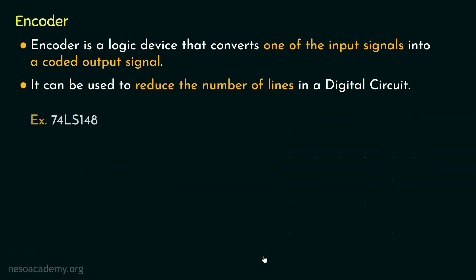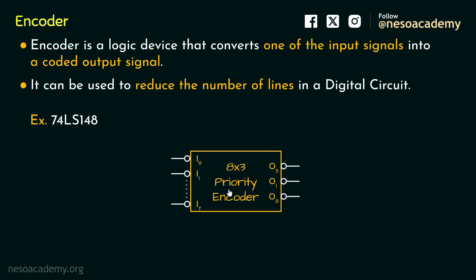Now specifically in case of 8085 microprocessor, the encoder 74LS148 is used. This is an 8 to 3 priority encoder. This encoder is generally used while handling interrupts. We will learn about it in details when we will be studying about the interrupt handling mechanism of 8085 microprocessor. And as you can notice, in this case, both the input lines and the output lines are active low.